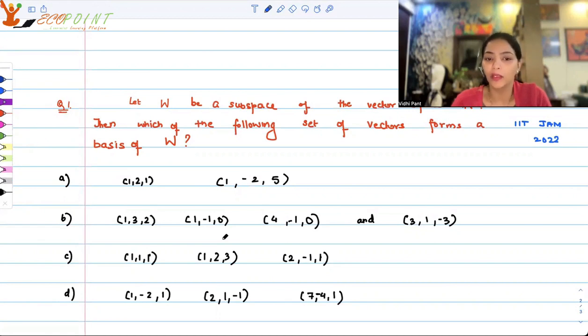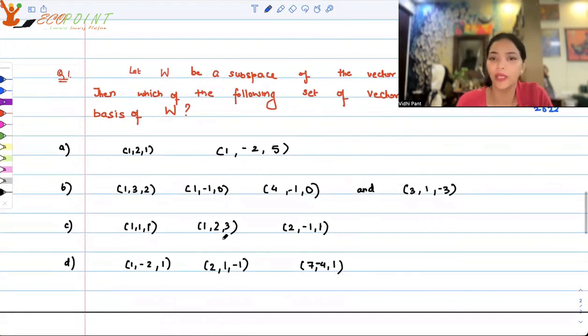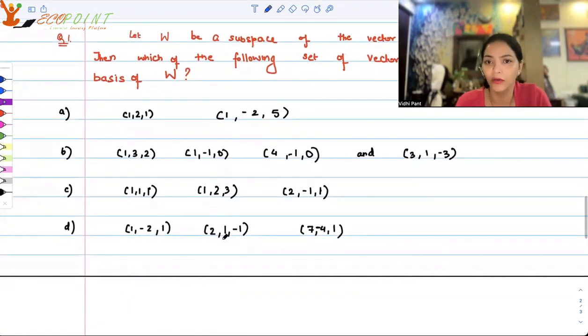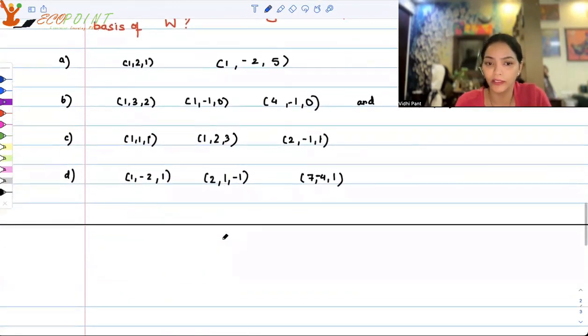Third option is (1,1,1), (1,2,3), (2,-1,1). Fourth option is (1,-2,1), (2,1,-1), (7,-4,1). So which would actually form a basis for this subspace of R³?